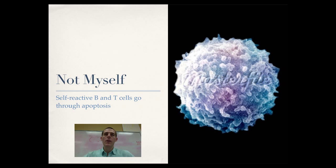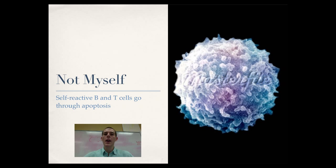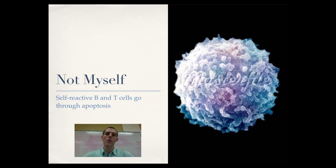One problem we have to worry about with the adaptive immune system is that there are so many variations in those antigen receptors that one of them could come out ready to attack cells within our own bodies. Its receptor could be built such that it recognizes a self-identifying molecule on the surface of a cell, in which case it would initiate an autoimmune response and the body would basically attack itself. So as T cells and B cells are growing up, they get tested for self-reactivity. If they are found to be self-reactive, those cells will go through apoptosis — programmed cell death — so they are killed off and don't proliferate and go around attacking the body. It's a way of ensuring our bodies are not attacking themselves.